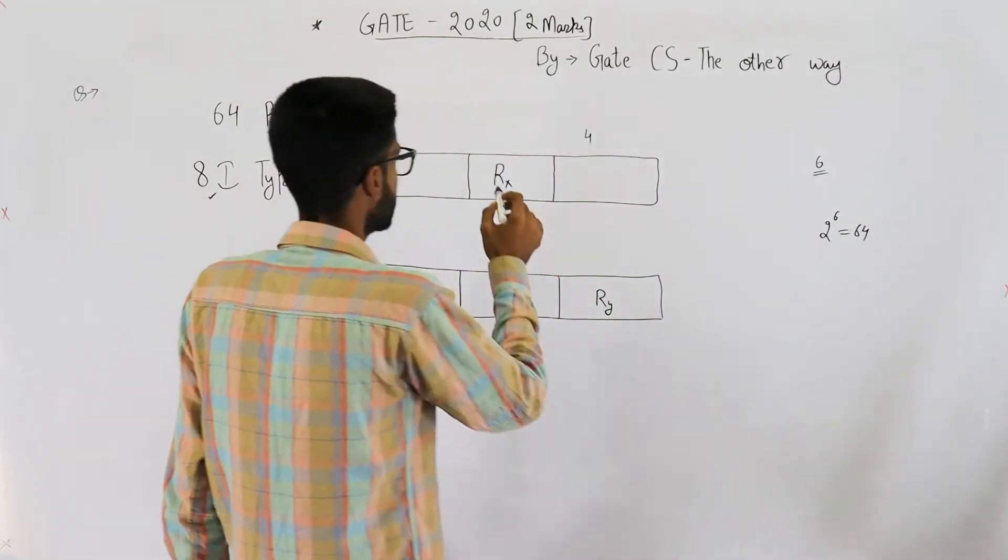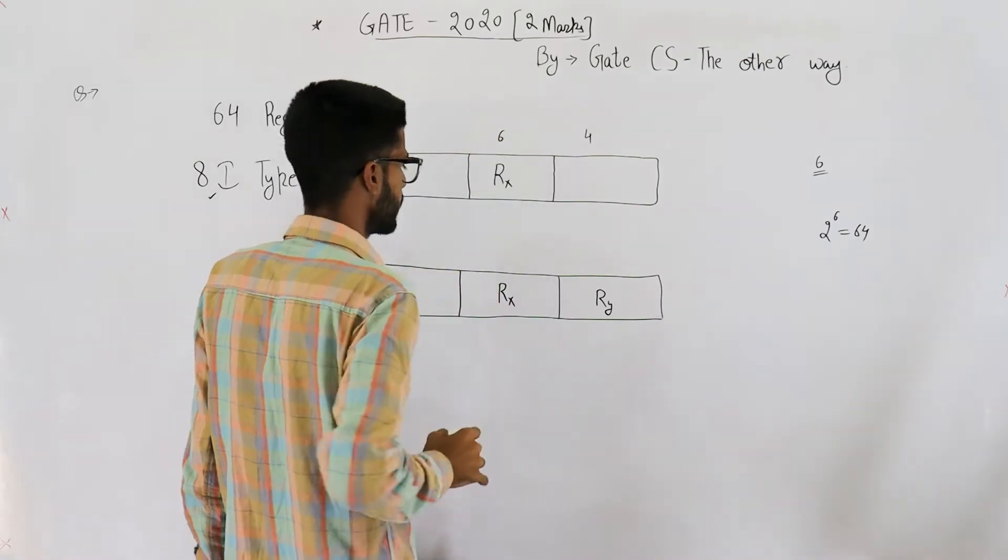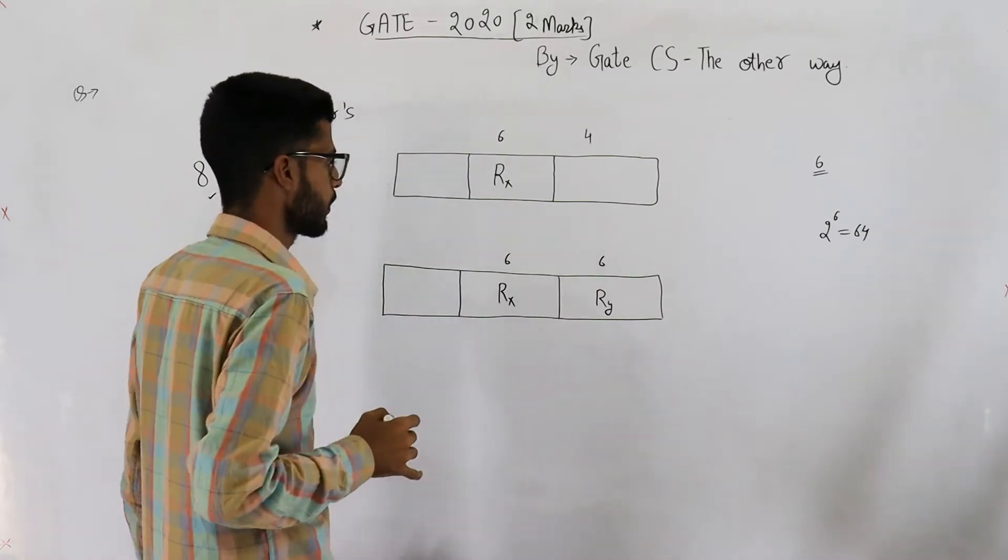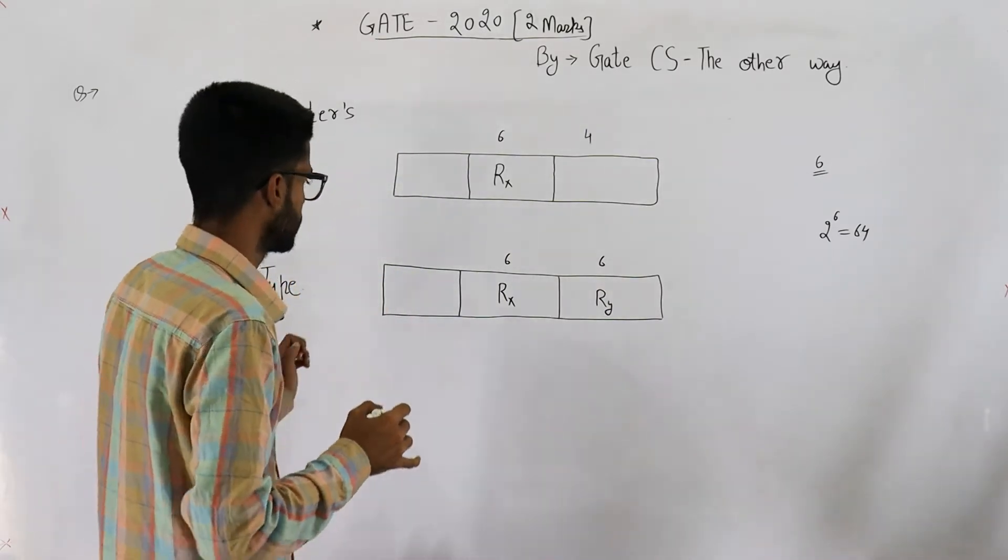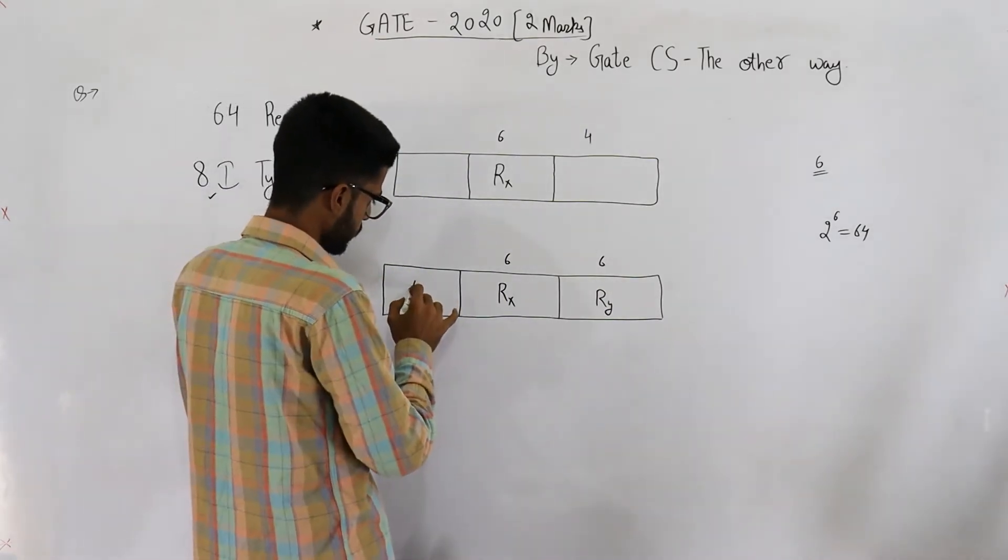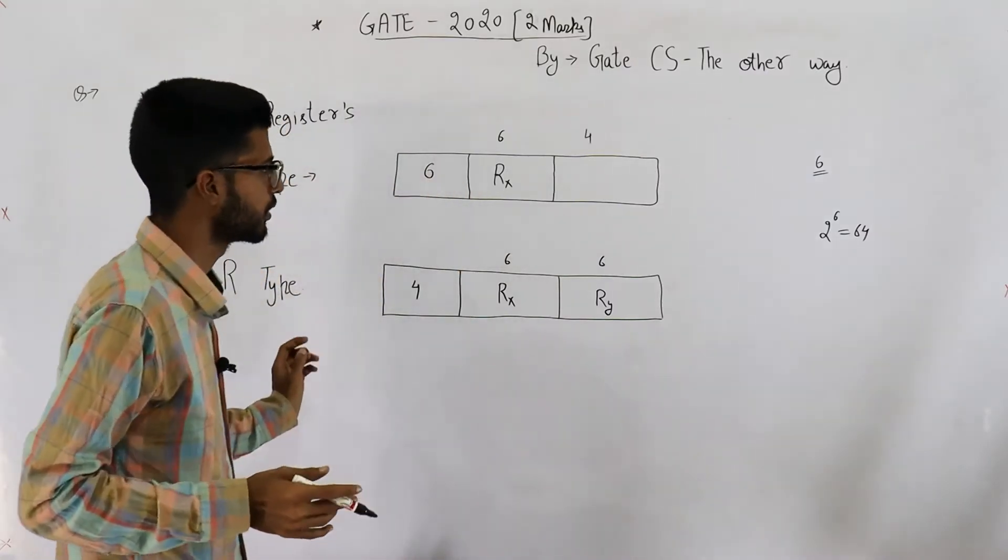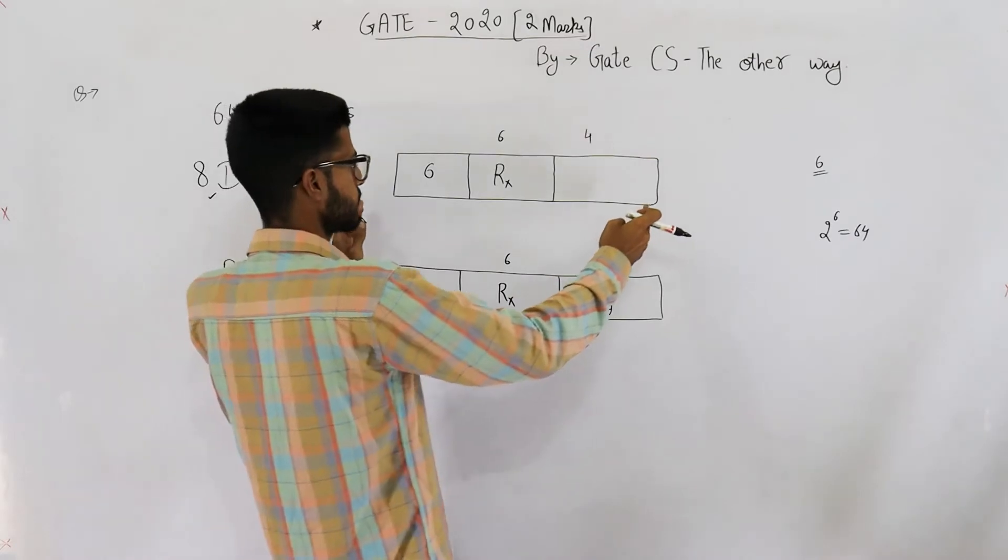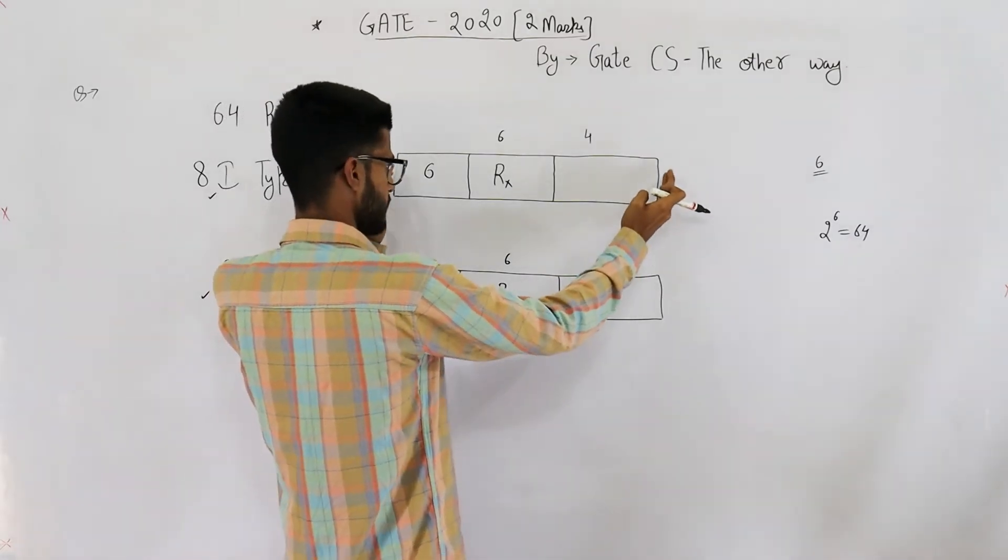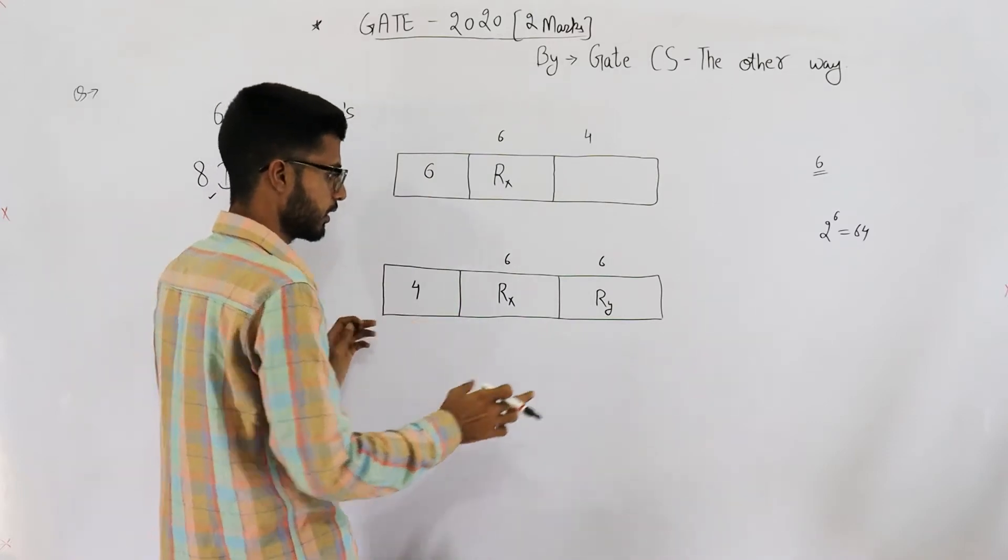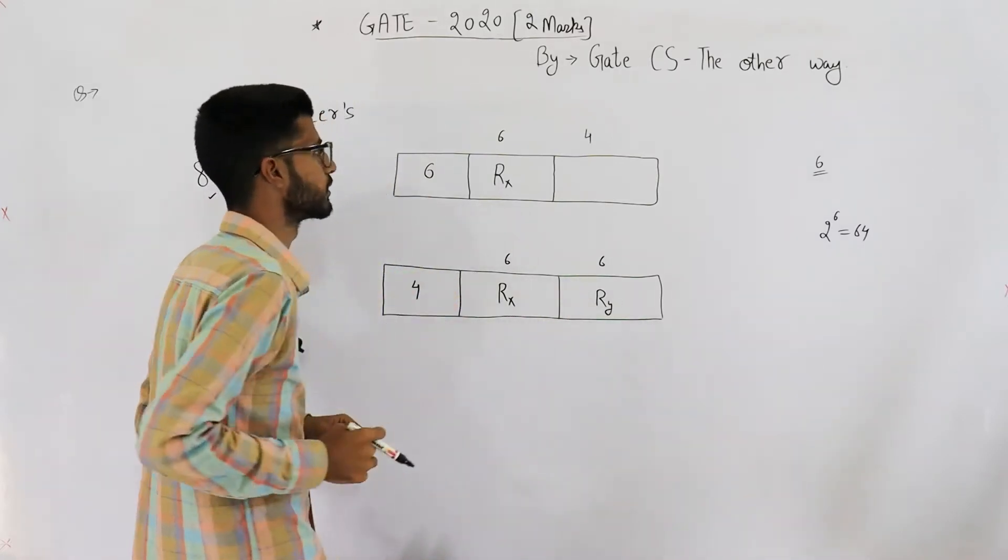So this is six bits. Similarly, these two fields are also six six bits each. That means this part is four bits and this part is six bits. Because total length of instruction is given as 16. This much is 16. This is 10. So we are left with six bits. Now this is 12. We are left with four bits.